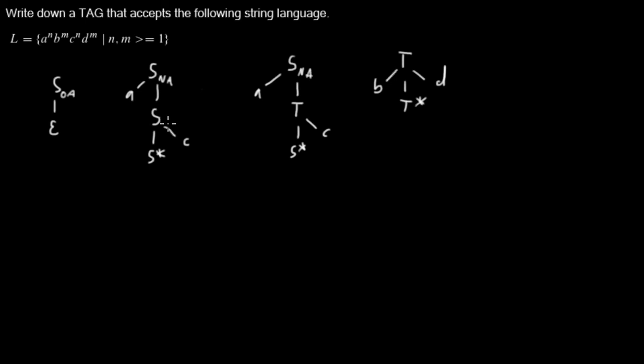So I'm going to these trees and writing down obligatory adjoins here and here as well. So I'm only allowed to end the derivation with this tree, where the adjunction of this tree into another one is the last step. So I will have at least one B and one D.